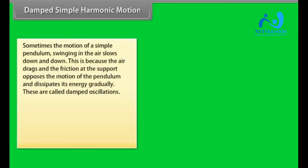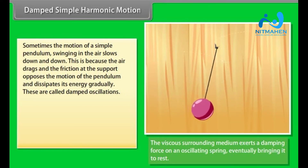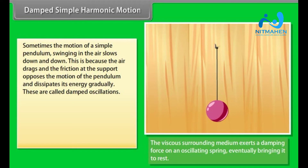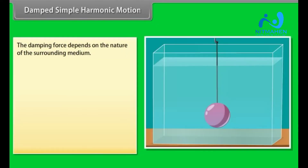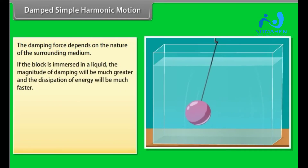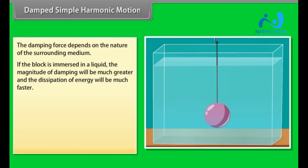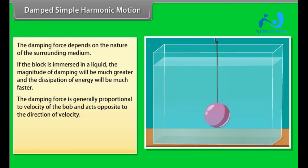Damped simple harmonic motion: sometimes the motion of a simple pendulum swinging in air slows down because air drag and friction at the support oppose the motion and dissipate its energy gradually. These are called damped oscillations. In damped oscillation the energy is dissipated continuously, but for small damping the oscillations remain approximately periodic. If the block is immersed in a liquid, the damping magnitude and energy dissipation are much greater. The damping force is generally proportional to velocity and acts opposite to it: F_d = −bv.